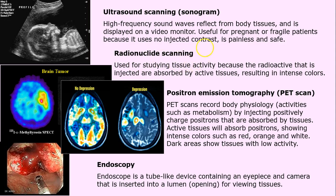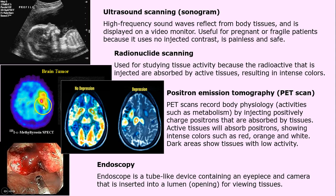Radionuclide scanning is nuclear medicine. Radioactive particles are injected as a fluid and absorbed by active tissues. The most active tissues absorb the radioactive dye, so you can see where activity is occurring. Unfortunately, in this example, there is a tumor visible from those areas of high activity.